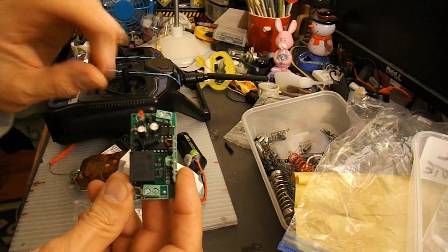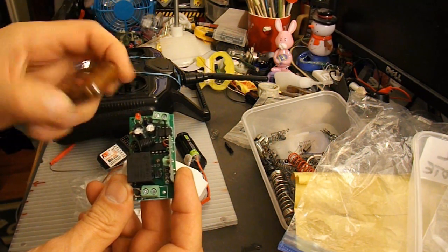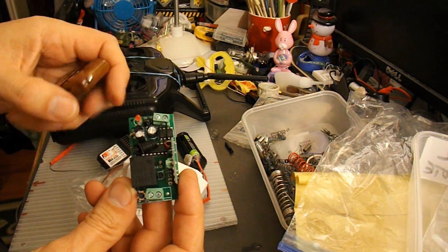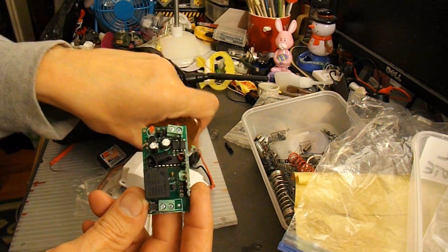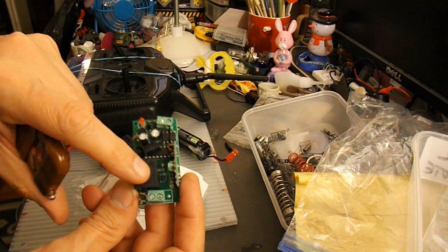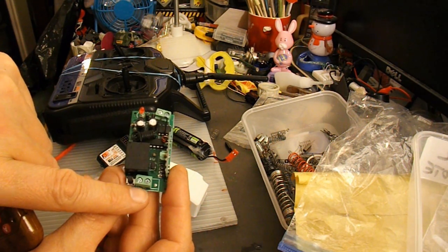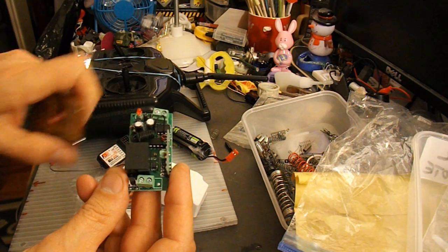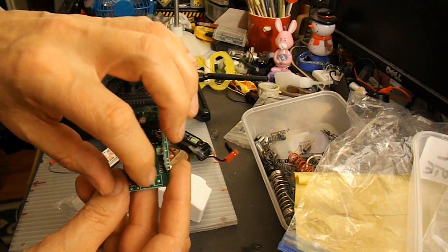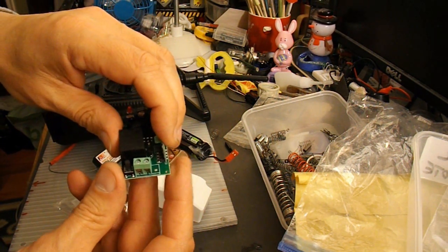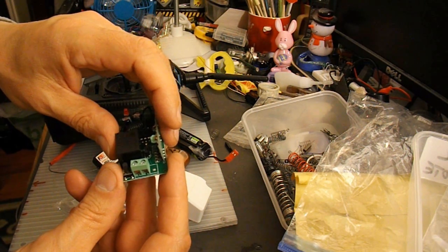So what happens is when you operate this, and this has got a battery attached to it, which isn't there at the moment. But when you operate this, that operates the relay, and that closes the contacts just there. So you need to attach something to there to make your door lock open and closed.